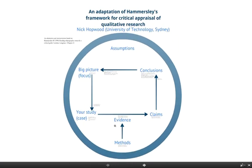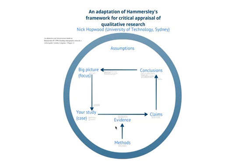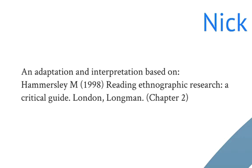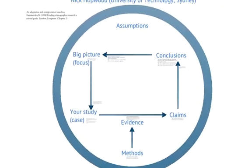I've called it an adaptation of Hammersley's framework for critical appraisal of qualitative research. It's mainly got four big concepts in it around the square and some linked ideas and assumptions. I want to be very clear about the original source for this. Martin Hammersley has been updating his publication since, but the first time I encountered this was in the 1998 version. A lot of the core ideas are absolutely Martin Hammersley's but I'm adapting some elements because it's not just about reading ethnographic research critically but qualitative research more generally.